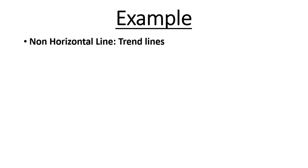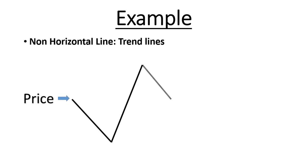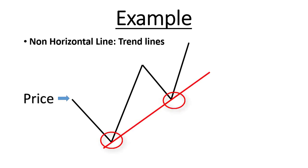Example number two: non-horizontal lines, like trend lines, channels, etc. Here is our price — the price makes new highs, higher lows — and our red line here is our trend line, our support line. We need two bounces to have a validated support or resistance.